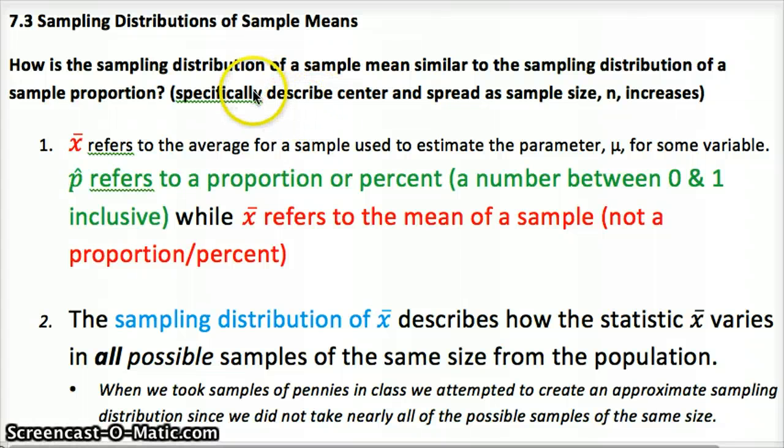In terms of that, I'd like you to think about center, spread, sample size, and then the three conditions - the random, normal, and independent. Which one of those conditions is the same, which is different?